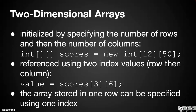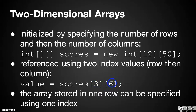All the values would have an initial value of zero. To get a value of a specific element in that two-dimensional array, we again have two pairs of square brackets. The first pair is the row index, and the second pair is the column index.